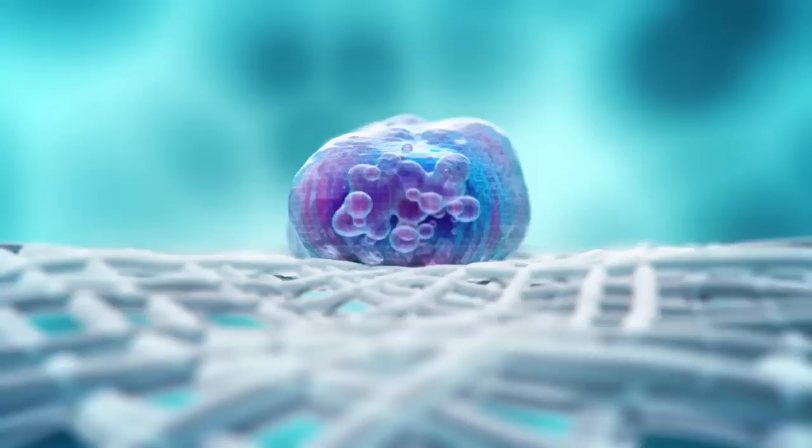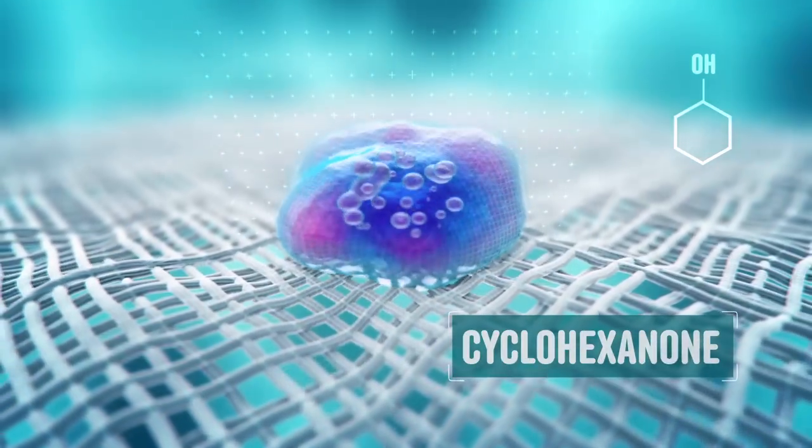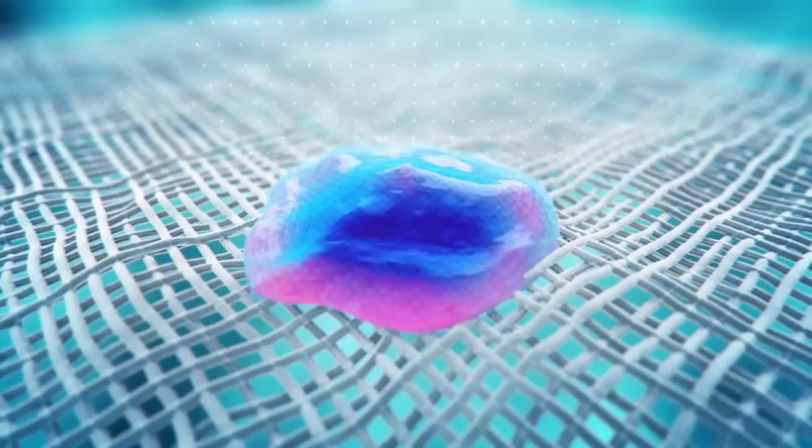But it's not over once the ink hits the paper. A solvent called cyclohexanone helps the ink stick to the slippery polymers on supergloss photo stock.